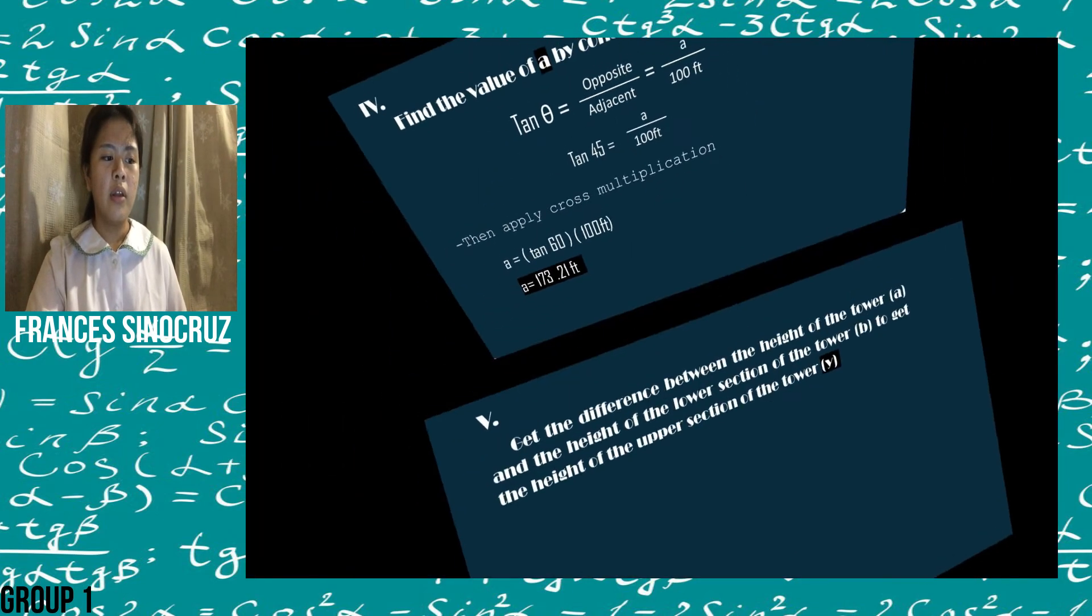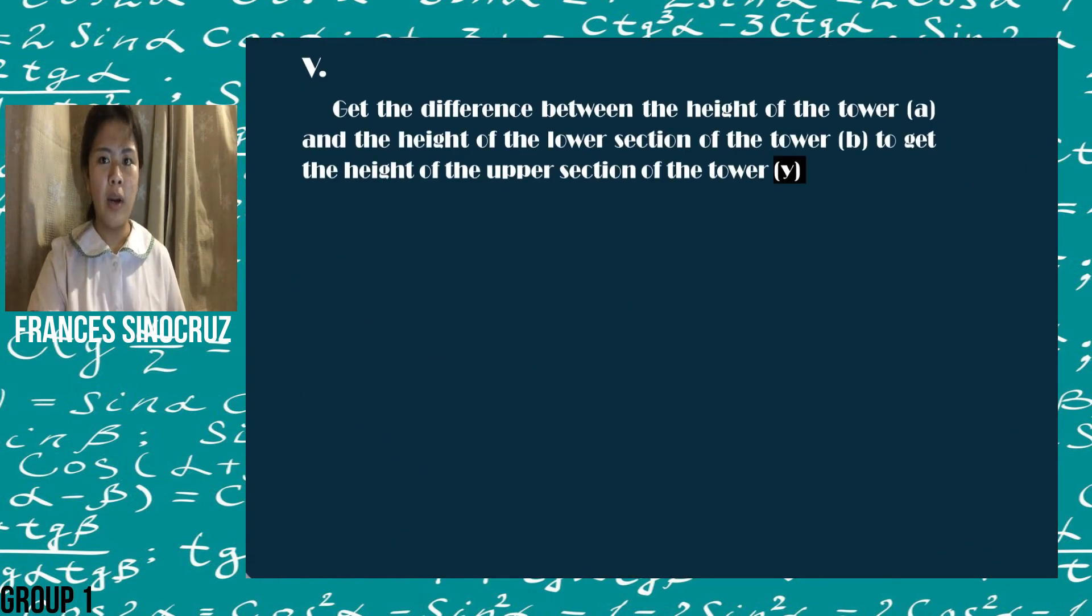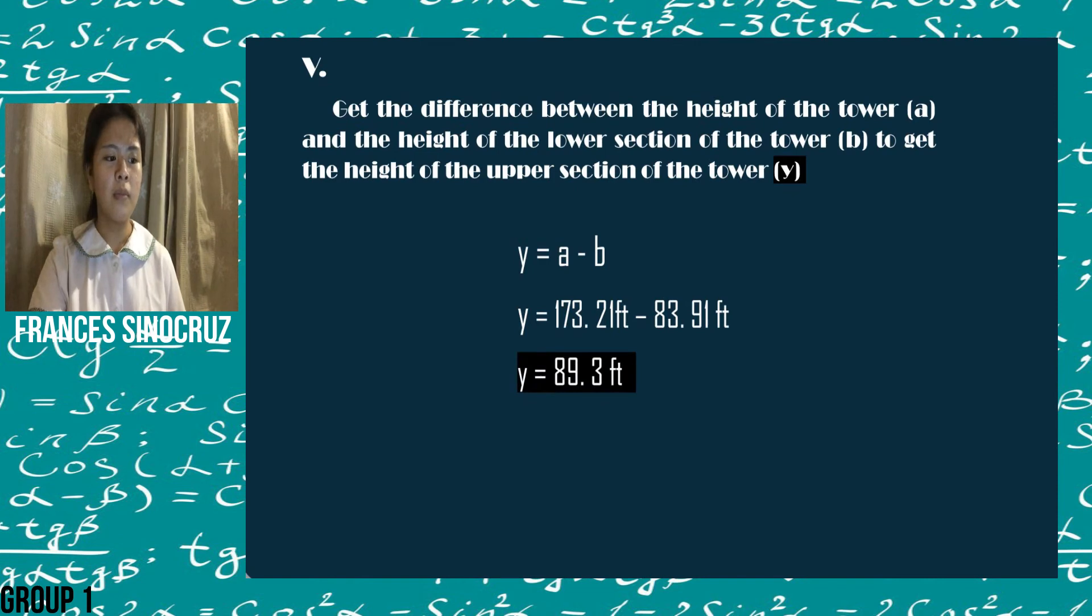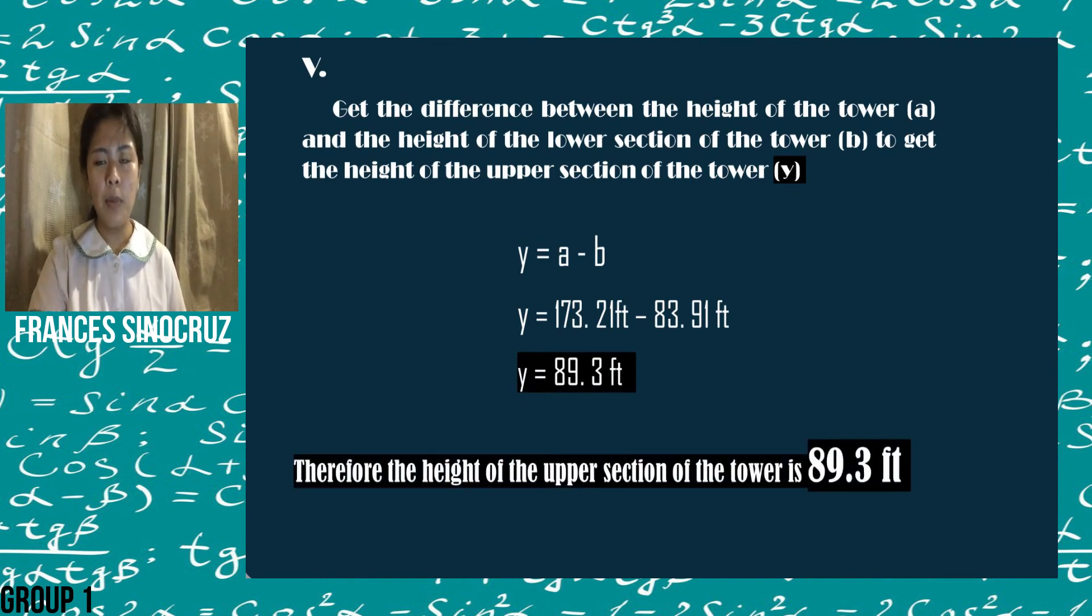We will get the difference between the height of the tower, denoted by A, and the height of the lower section of the tower, denoted by B, to get the height of the upper section of the tower, denoted by Y. The formula would be Y equals A minus B. Let's substitute the given. A is 173.21 feet subtracted by B, which is 83.91 feet, resulting to a difference of 89.3 feet. Therefore, the height of the upper section of the tower would be 89.3 feet.